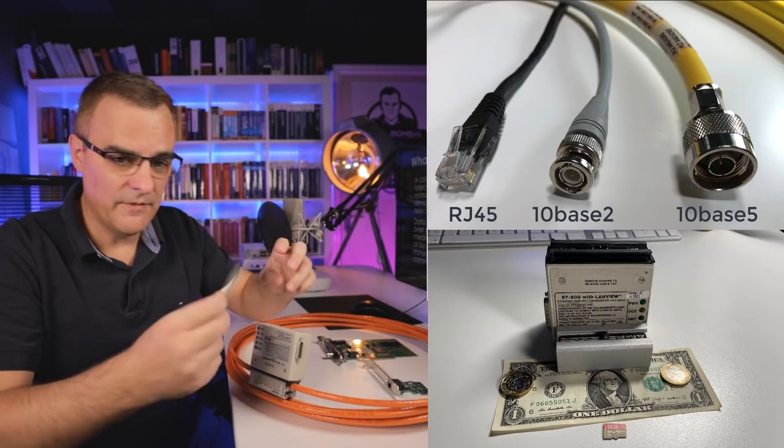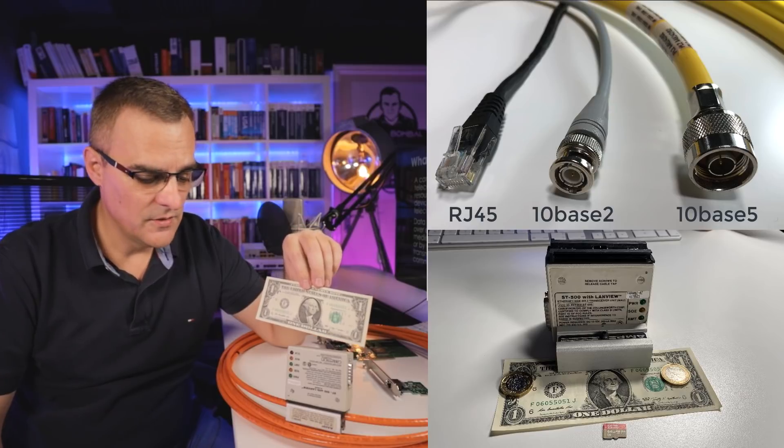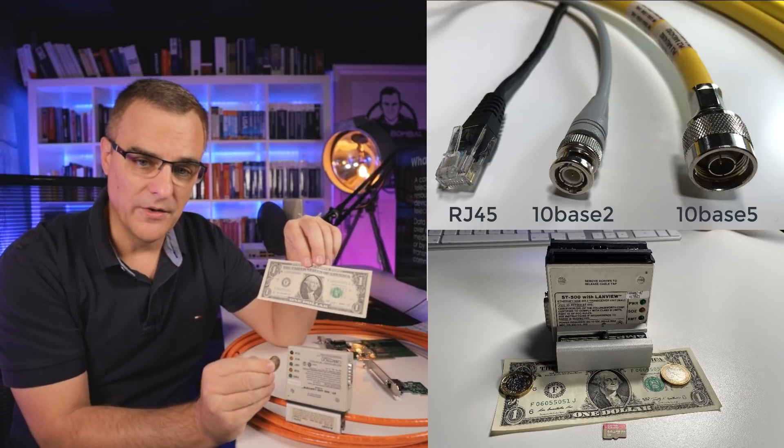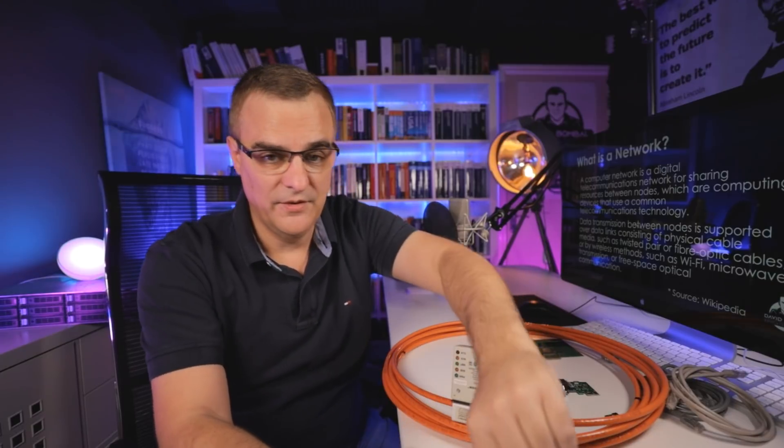So to give you an idea of scale, here I've got a $1 US banknote. So $1, here's a British pound. So notice how big that is. This is massive cabling, really, really old technology.